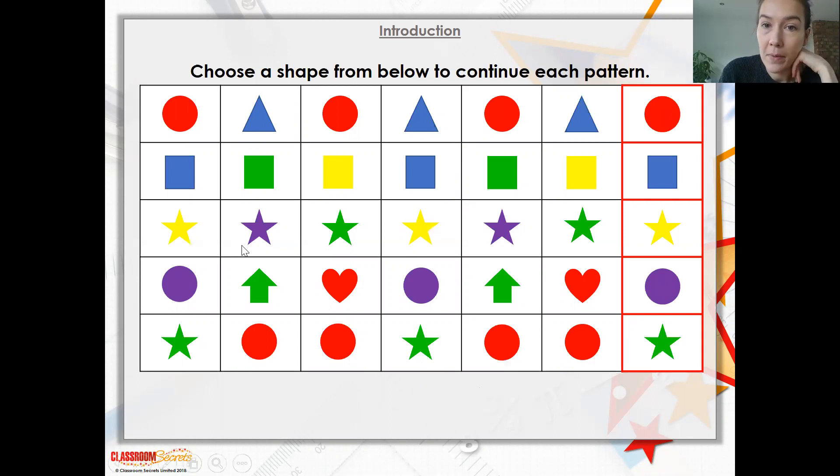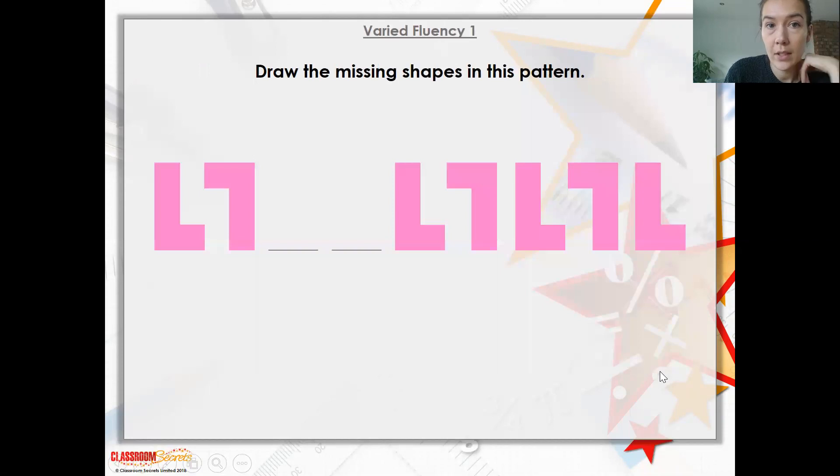But these are the correct shapes because they are obviously following on. So the top one, we've got circle, triangle, circle, obviously red, blue, red. And this one, we've got different colours of squares, stars, and then these two are a little bit more complicated on the bottom, where they have different shapes following on.